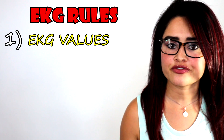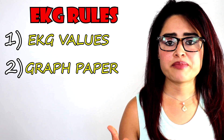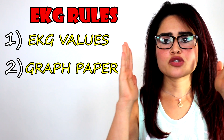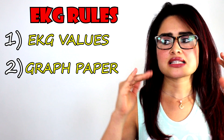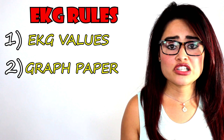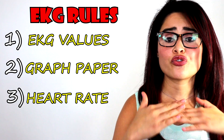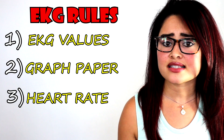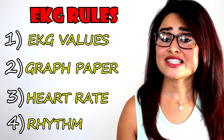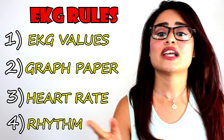For example, the normal PR interval. Then number two, we need to know our graph paper — what it looks like. There are big boxes and little boxes, and we need to know the value for each. Then number three, we need to know what the rate is and what a normal rate looks like. And lastly, number four, we have the rhythm — is the rhythm regular or irregular? So let's get started.